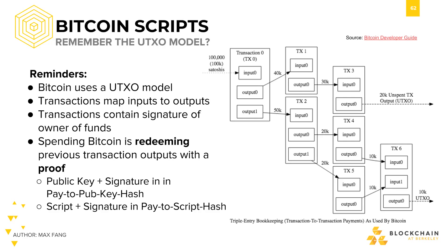For example, if I send Bitcoin in the form of UTXOs to Rusty, then in that transaction I will encode that only Rusty can redeem these UTXOs. And the proof that Rusty would have to provide in order to redeem the Bitcoin is constructed with two things: his public key and his signature.